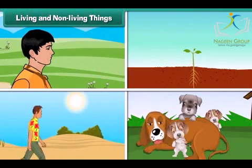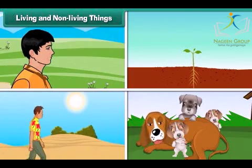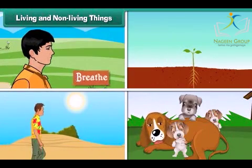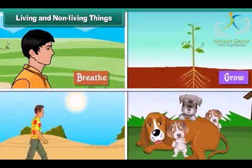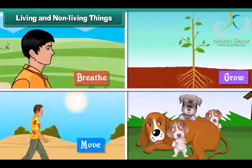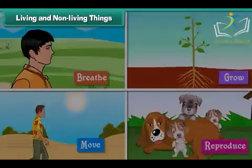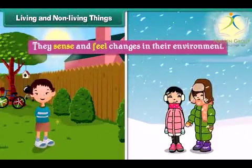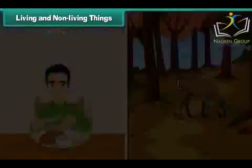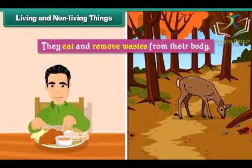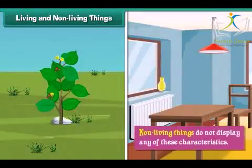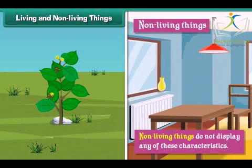Living things display the following characteristics: they breathe, they grow, they move, they reproduce, they sense and feel changes in their environment, and they eat and remove wastes from their body. Non-living things do not display any of these characteristics.